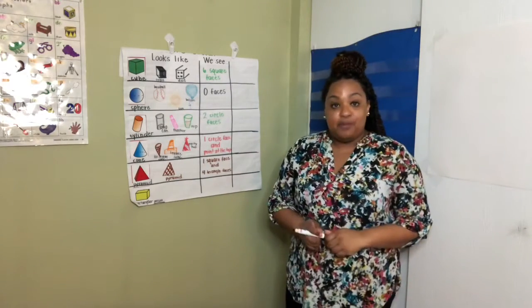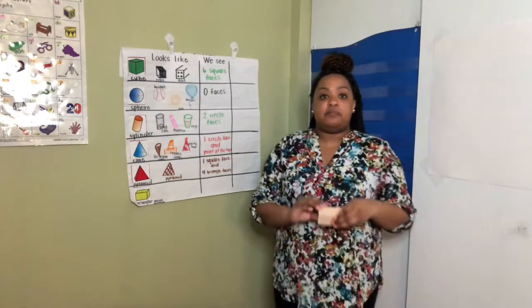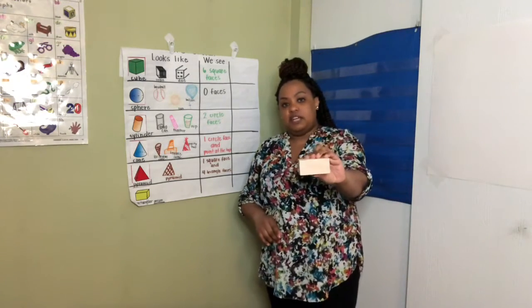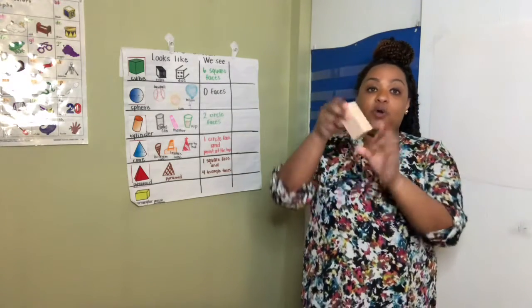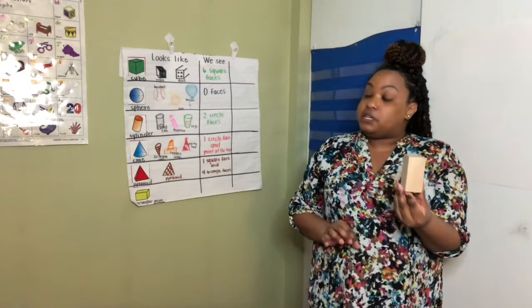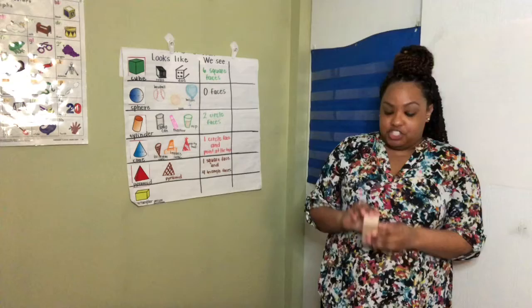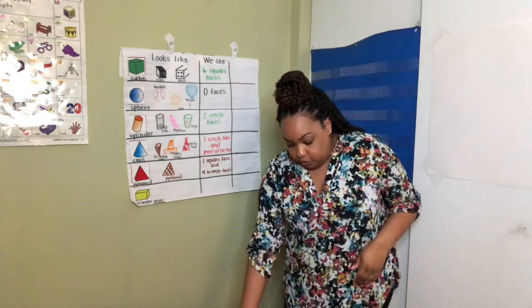The last shape we will explore is a rectangular prism. This is a rectangular prism. Sometimes we might see it going from side to side or sometimes we might see it standing up. A rectangular prism is a very common shape. Now many things look like a rectangular prism.